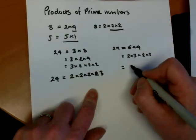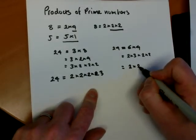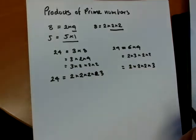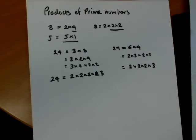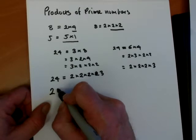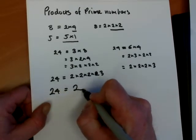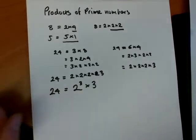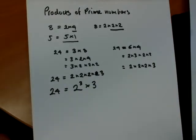And if we look at the other way that we did it, we also have 2 times 2 times 2 times 3. So it doesn't matter then what pair we actually start with. We end up with the same answer. So 24 equals 2 to the power 3 times 3.